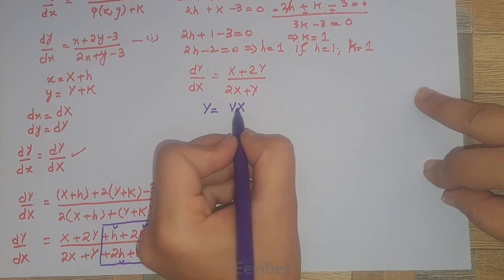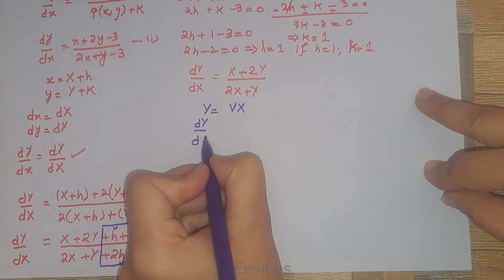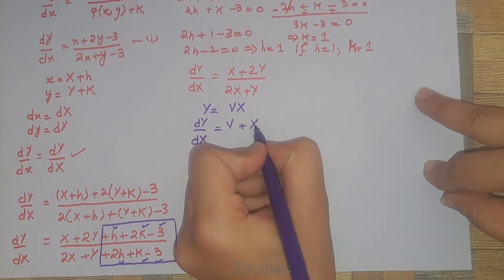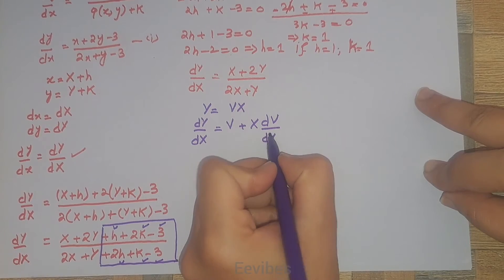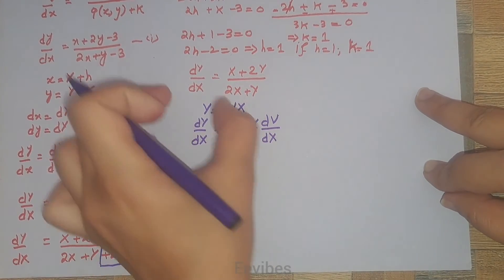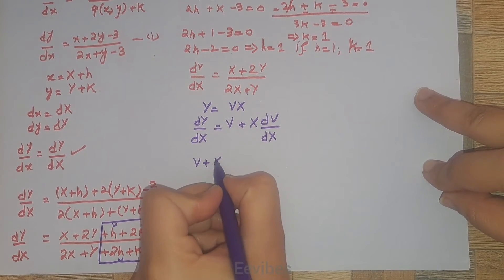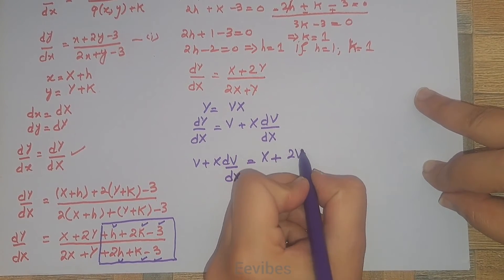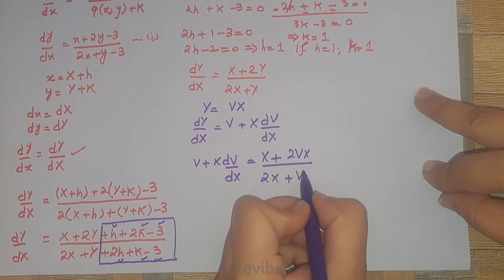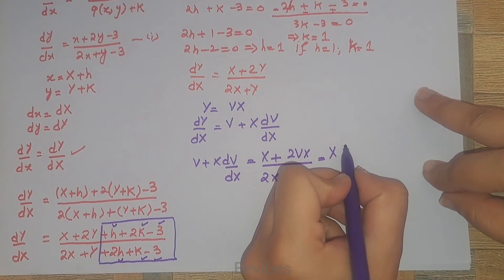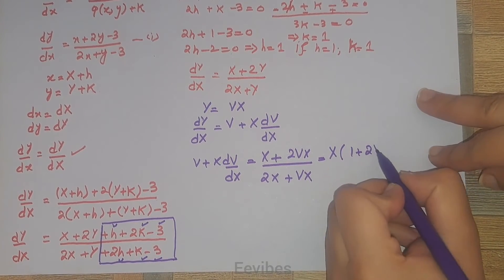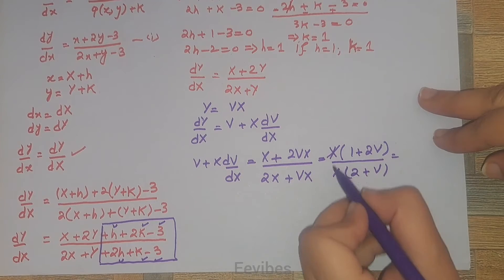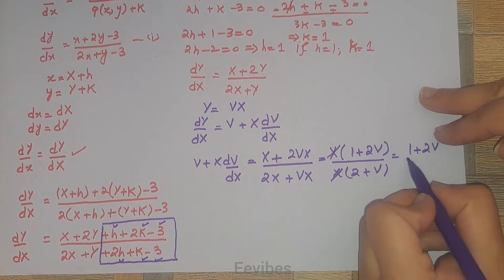Here v and X are both variables. So dY/dX = v·(dX/dX) + X·(dv/dX) = v + X·(dv/dX). Substituting into the equation: v + X·dv/dX = (X + 2vX) / (2X + vX). Taking X out from numerator and denominator, they cancel, leaving (1 + 2v) / (2 + v).